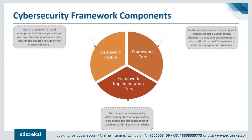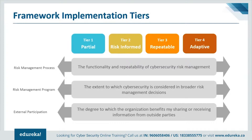The tiers describe the degree to which an organization's cybersecurity risk management practices exhibit the characteristics defined in the framework. The tiers range from Partial (Tier 1) to Adaptive (Tier 4) and describe an increasing degree of rigor, how well integrated cybersecurity risk decisions are into broader risk decisions, and the degree to which an organization shares and receives cybersecurity information from external parties. Tiers do not necessarily represent maturity levels. Organizations should determine the desired tier, ensuring the selected level meets organizational goals, reduces cybersecurity risks to an acceptable level, and is feasible to implement fiscally and otherwise.